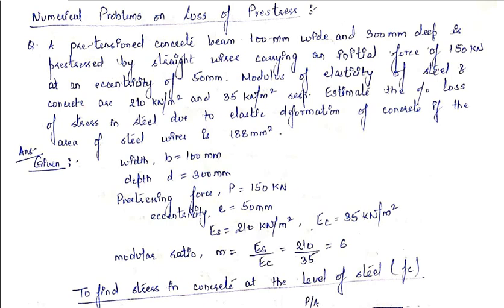The first question is: a pre-tensioned concrete beam, 100 mm wide and 300 mm deep, is pre-stressed by straight wires carrying an initial force of 150 kN at an eccentricity of 50 mm. The modulus of elasticity of steel and concrete are 210 kN/mm² and 35 kN/mm² respectively. Estimate the percentage loss of stress in steel due to elastic deformation of concrete if the area of steel wires is 188 mm².